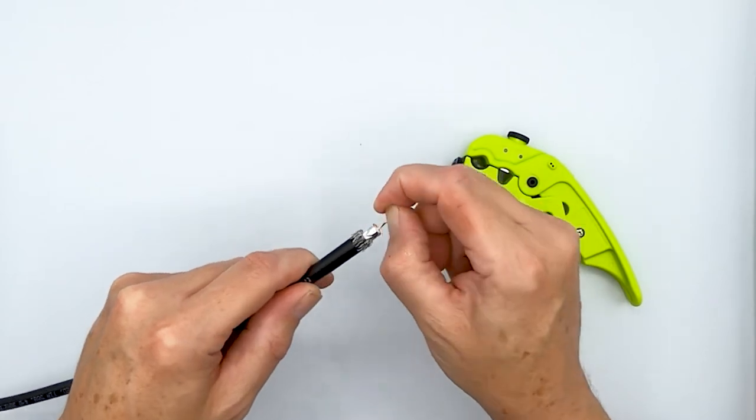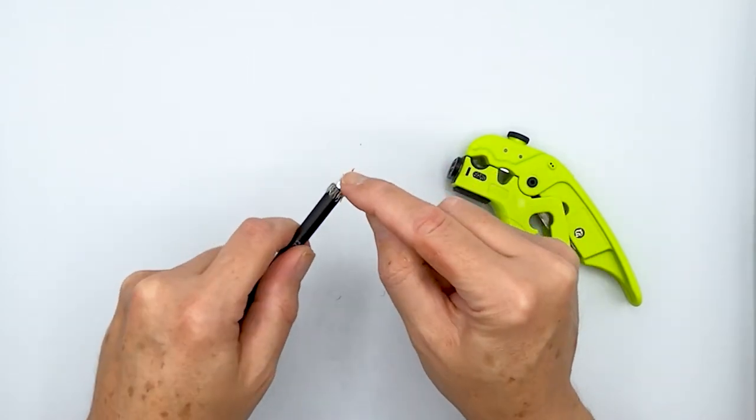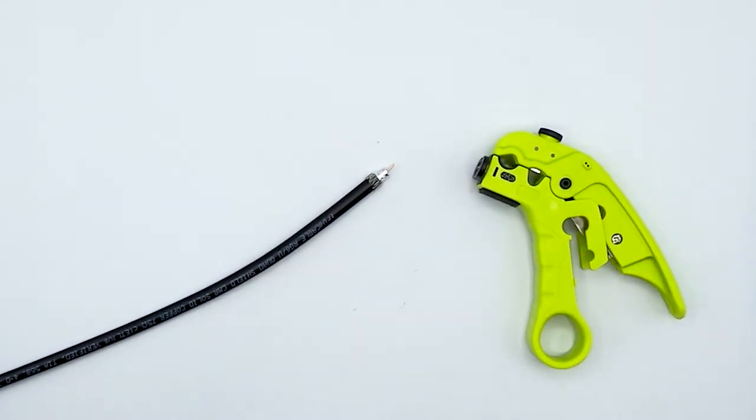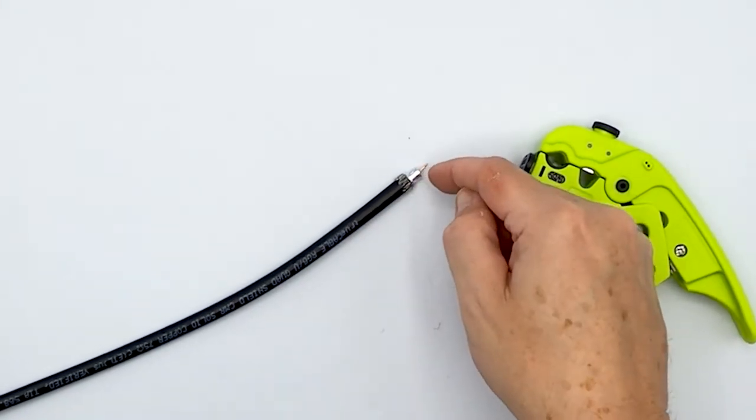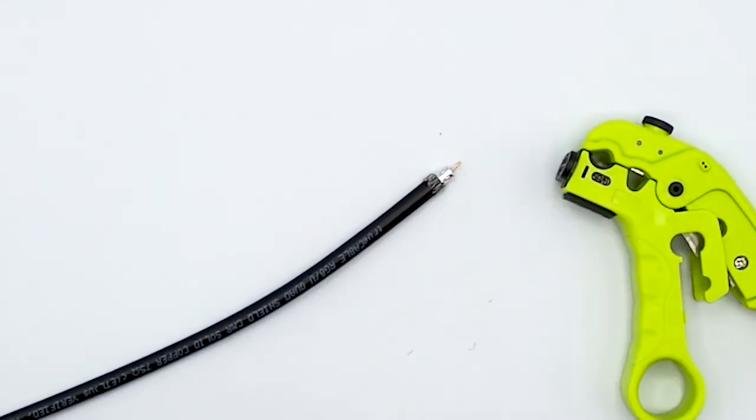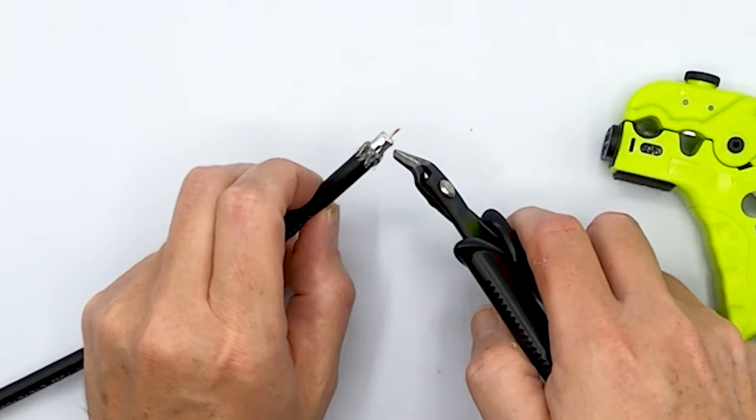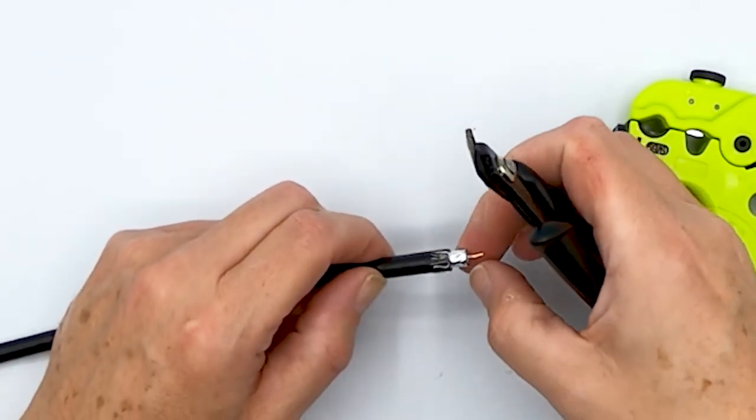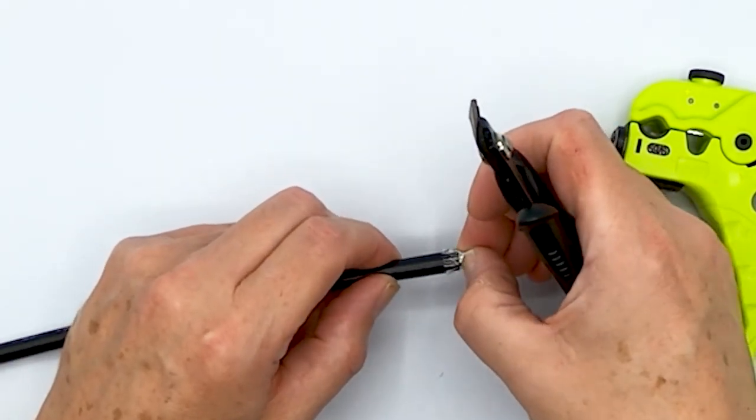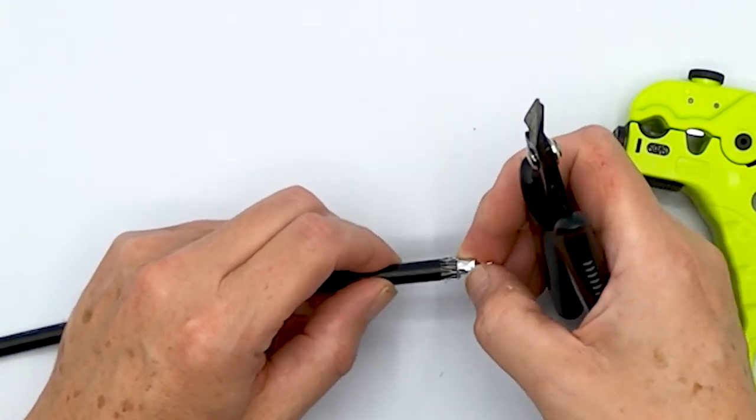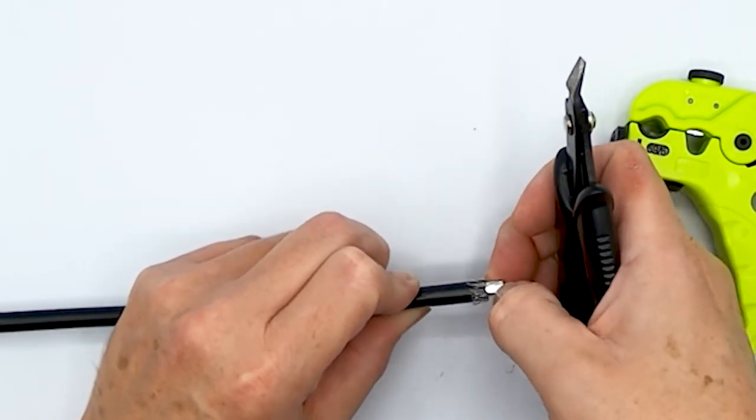So you want to go ahead and brush back this first braid shield that's on there, get it out of the way, get it all backwards. And at this point, you now have this foil shield. However, there's another braid shield below that foil shield. So we need to get that foil shield off.